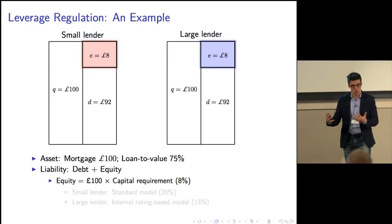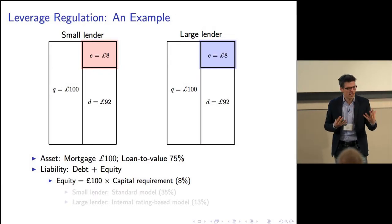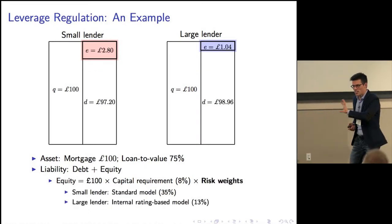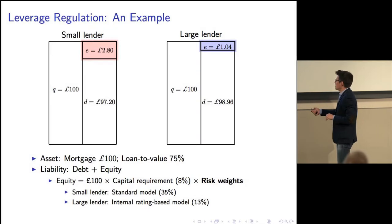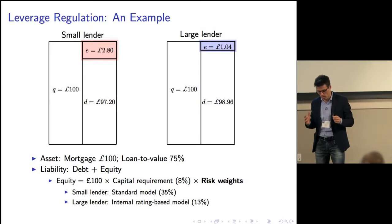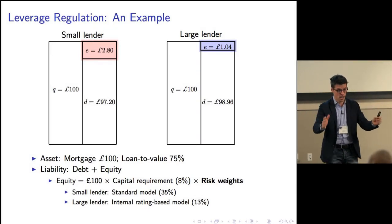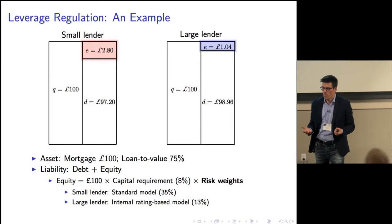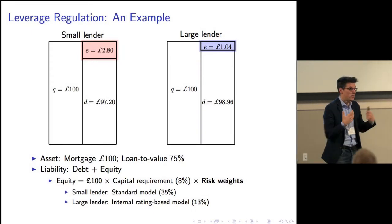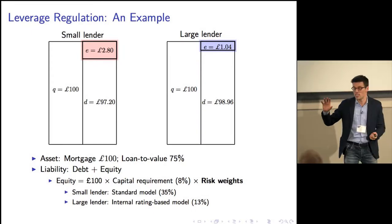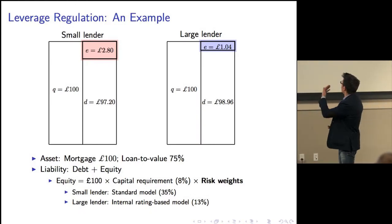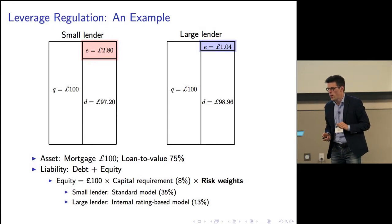After the crisis, under Basel 2, in order to better link capital and risk, the capital requirement becomes risk-weighted. Take the small lender, which adopts what we call the standardized model — the regulator tells them the risk weight on this contract is 35 percent, so the capital needed is 2.8 pounds. Whereas large lenders use their internal ratings-based model and, in this simple example, the output is that the risk is only 13 percent, so about one pound of equity is enough.